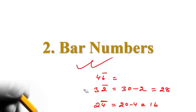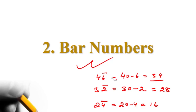Tell me the answer — 39. Very good. Now I am moving to a 3-digit number. Let us suppose we have a number this time: 1, 2, 3, but we have a bar on 3.